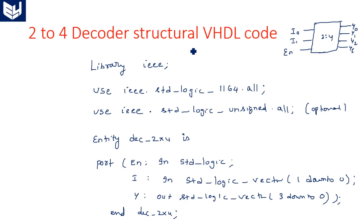Now coming to the structural model. Architecture dec_structural of decoder_2by4 is. We are writing depending on the type of programming method. As we are writing structural code here, we have to first instantiate the components which are required for the implementation of this particular logic diagram.